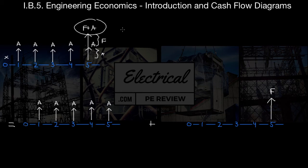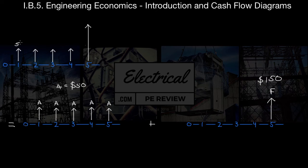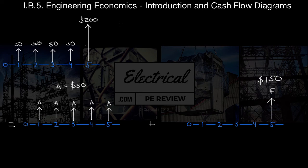For example, if our annual series A was $50 and our future worth was $150, we would have $50 at periods one, two, three, and four. Then our fifth period would be the sum of our uniform series and our future amount — so this amount would of course be $200.